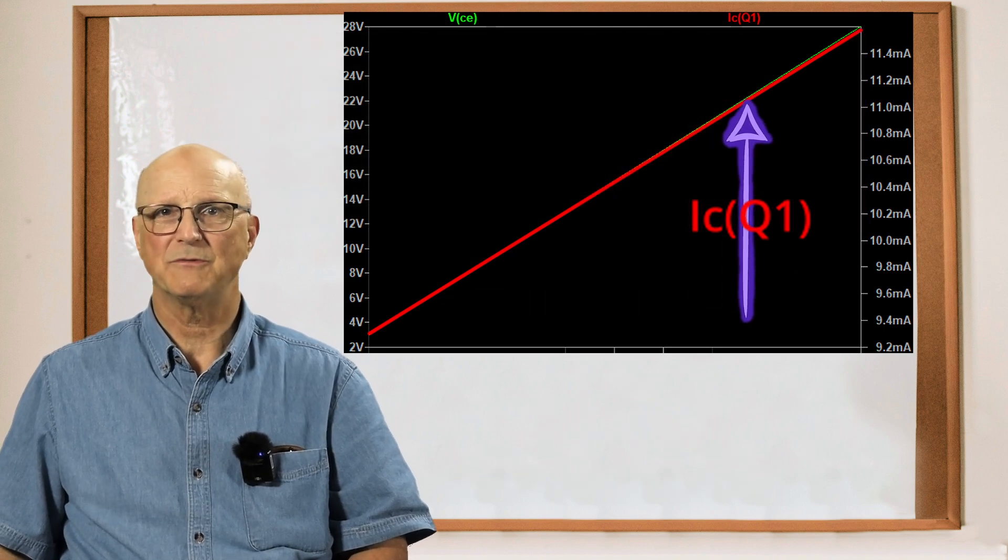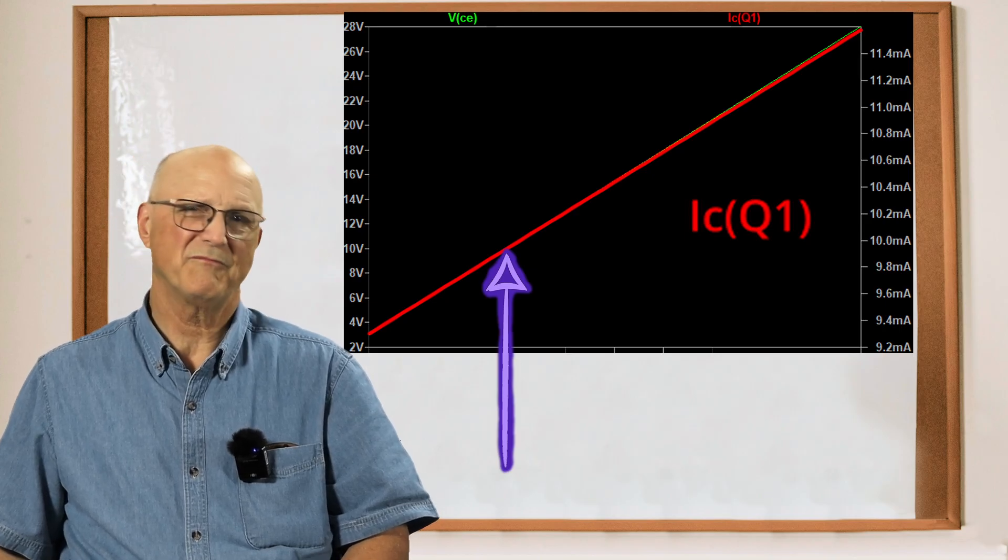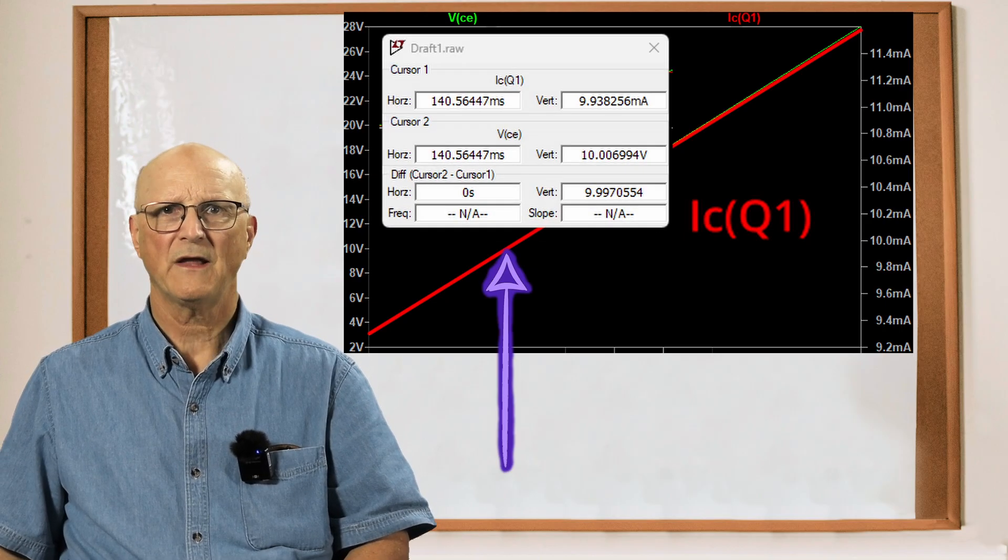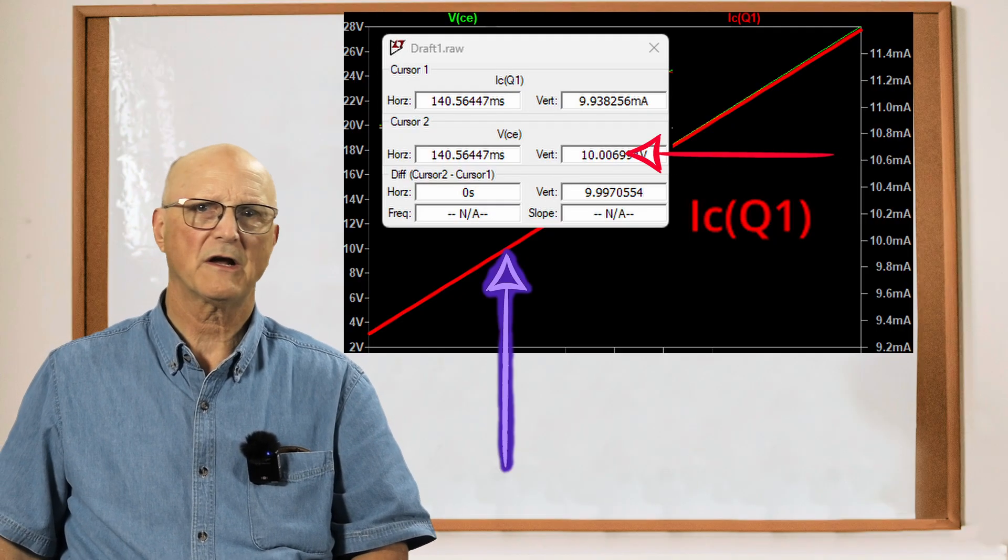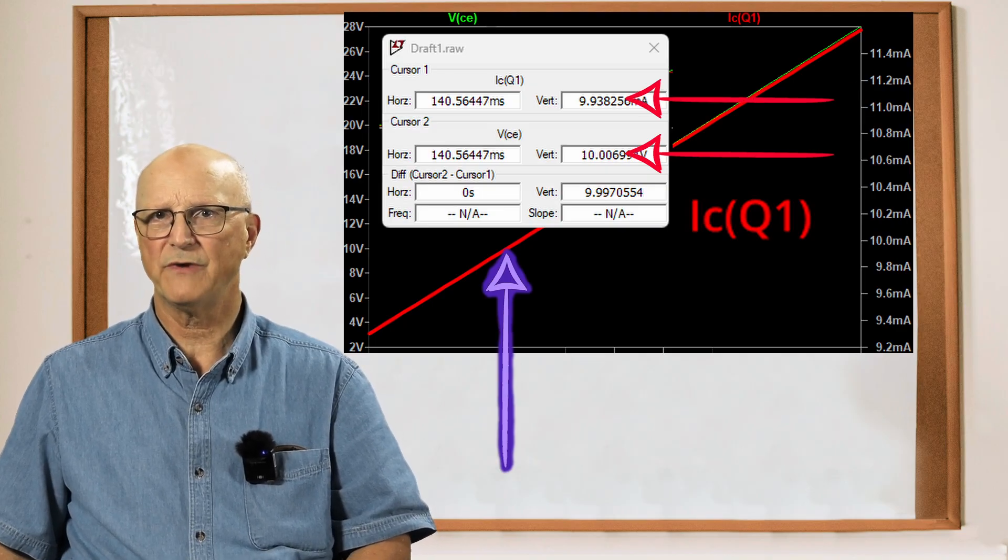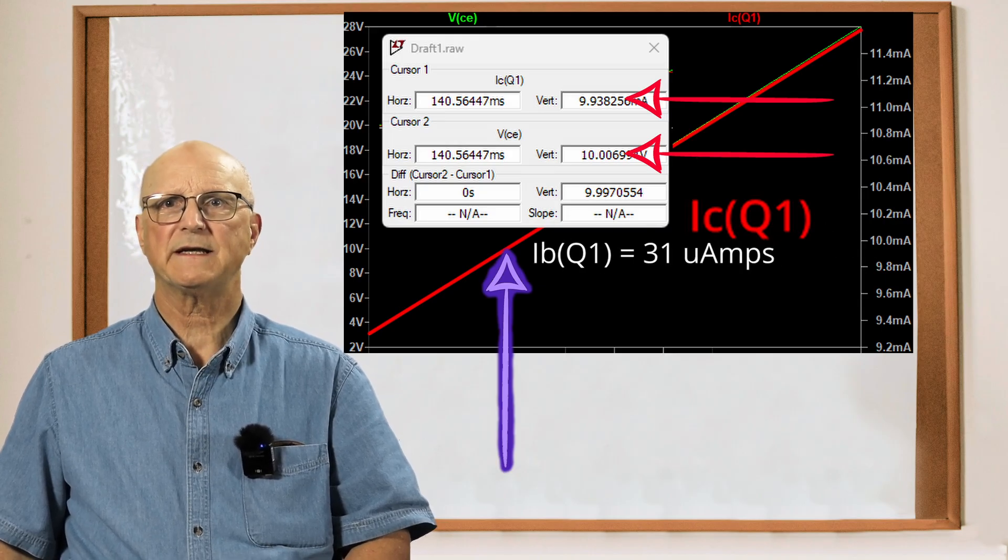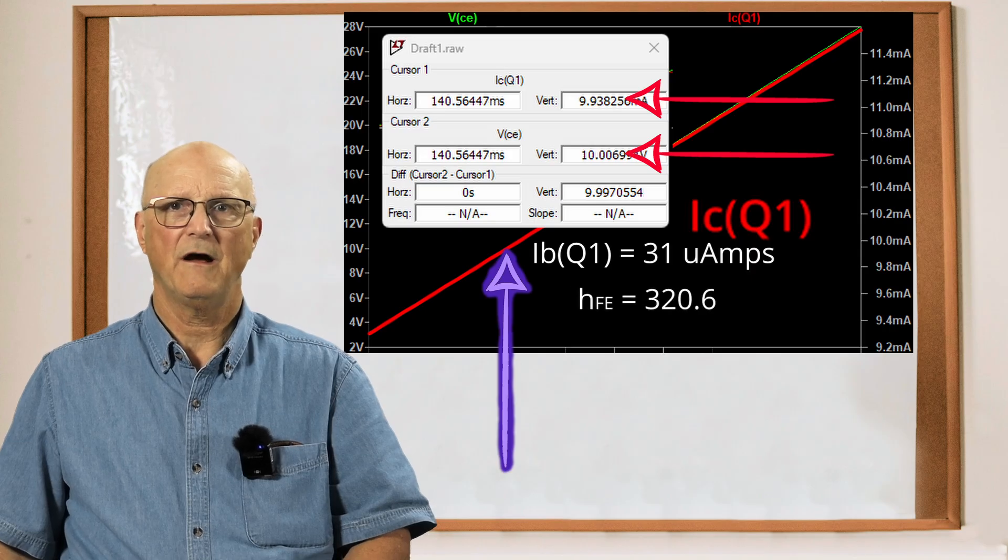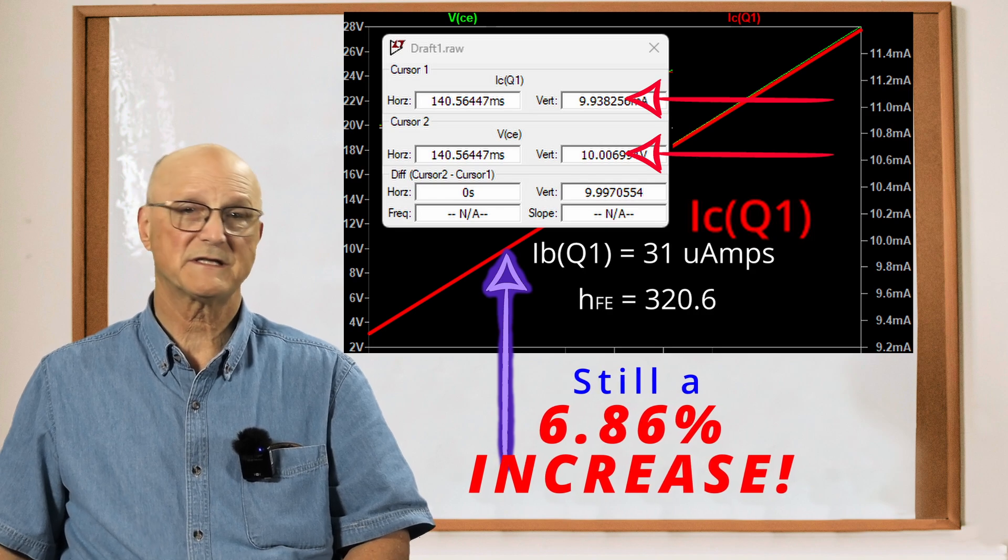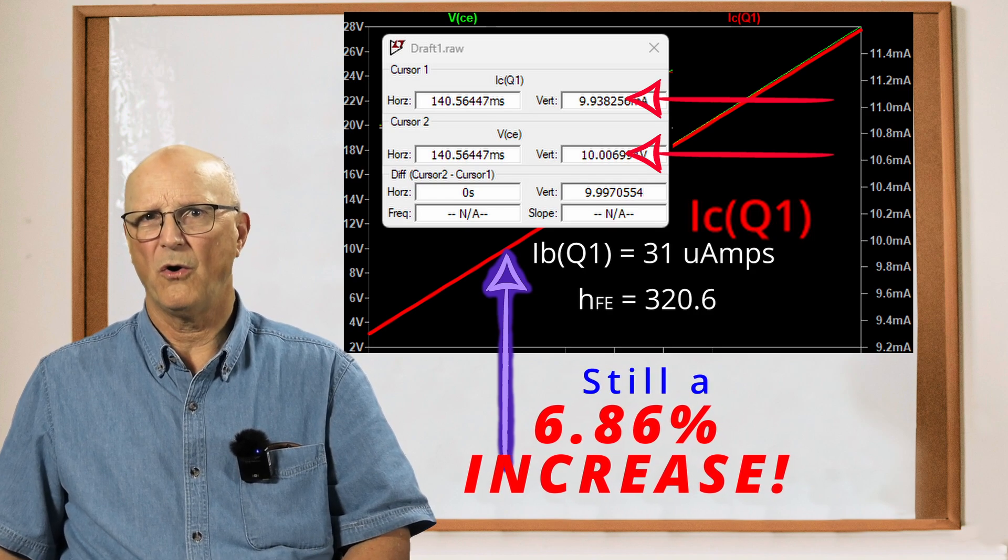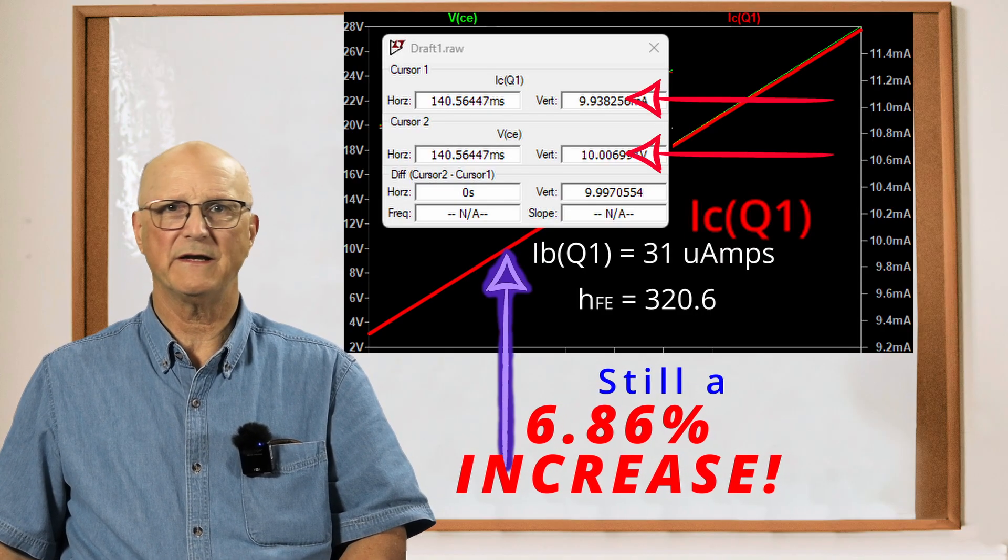Now, let's back this up to a VCE of 10 volts and see what we have there. I mean, after all this is maybe a bit more of a realistic change. We now have a VCE of 10.01 volts. The collector current is now 9.938 milliamps. With our base current of 31 microamps, this gives us a calculated HFE of 320.6. Now, this is still an increase of 6.86% over the current gain or HFE at a VCE of 2.98 volts.